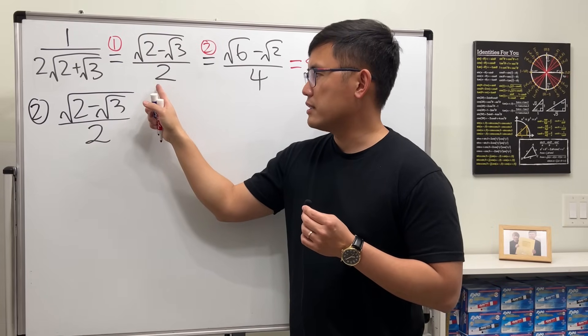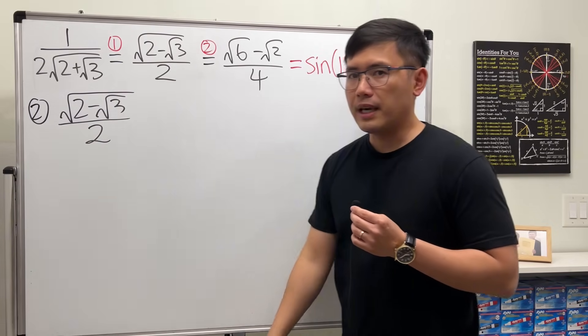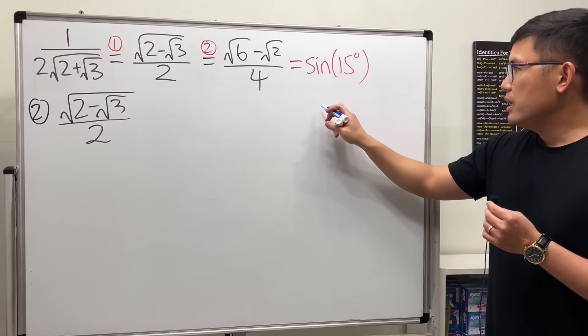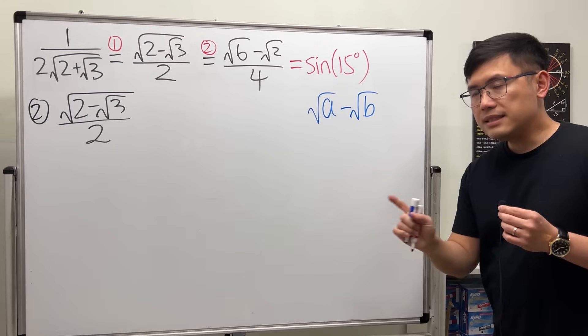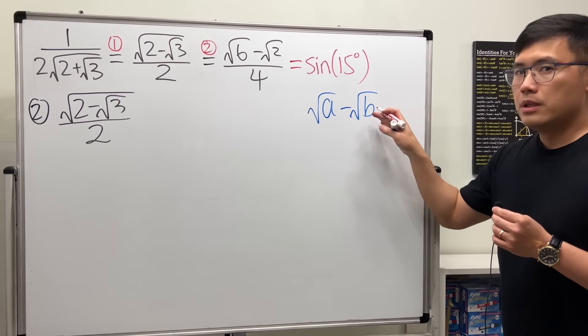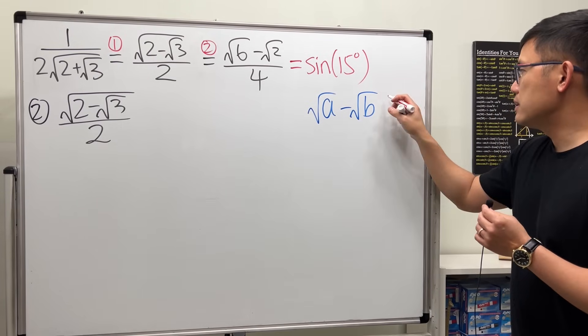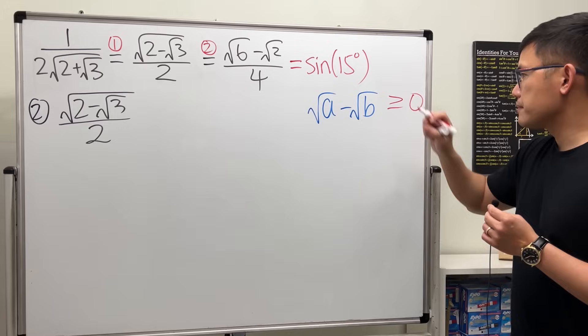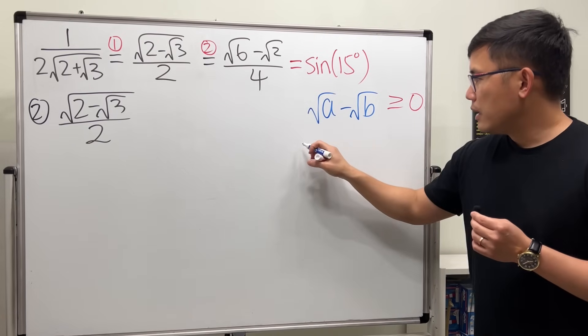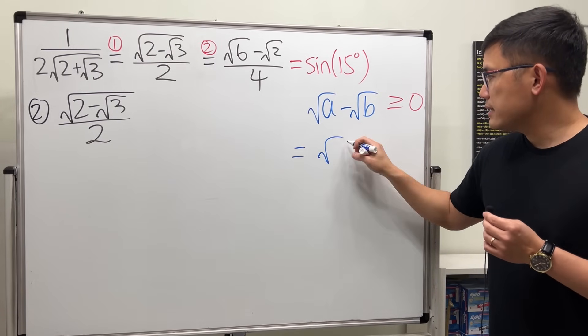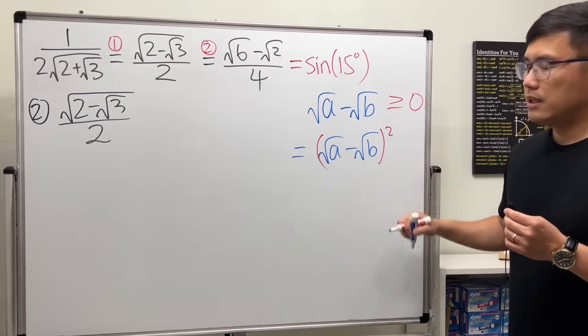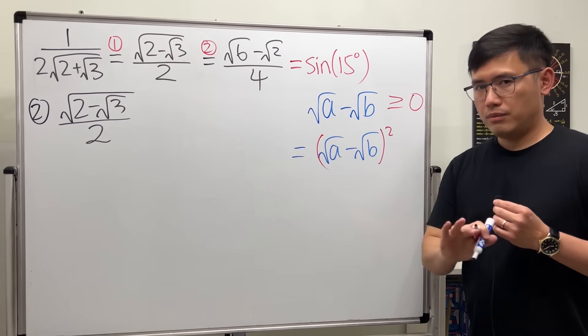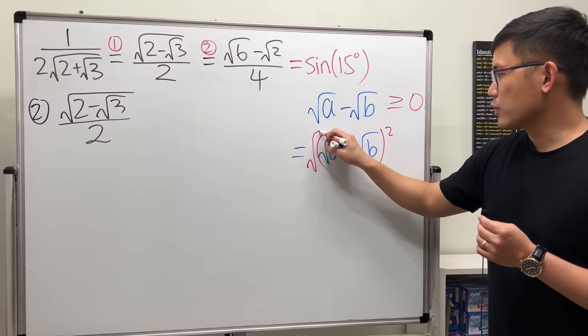So, if we look at square root of a minus square root of b in general, and let's say we want a to be bigger than or equal to b, so this expression is non-negative. Have a look. I'm going to look at square root of a minus square root of b. Let's square that. But of course, I will change the whole thing. Don't worry, though. Take the square root afterward.